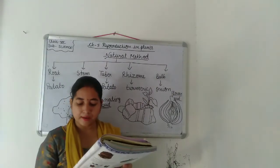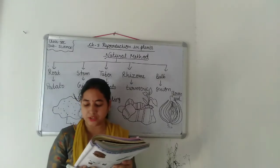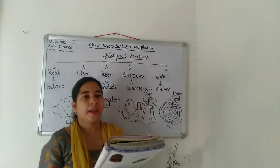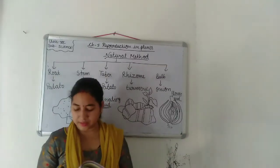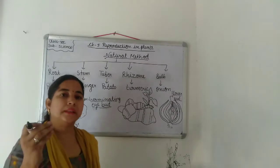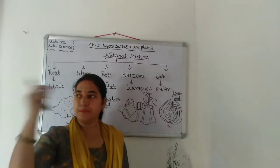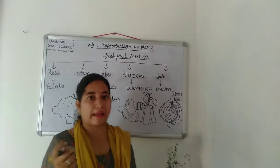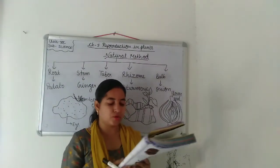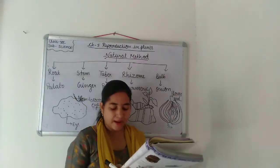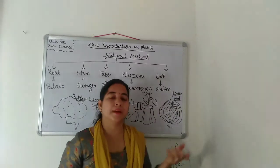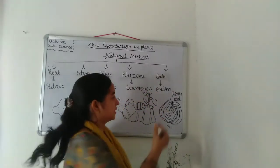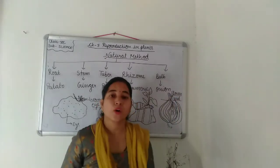Now bulb — certain plants such as onion, garlic, and tulip produce a short thick stem called a bulb. Bulbs have thick leaves called scales that contain food for the plant. Onion per jo transparent jilli si paai jaati hai, unhe scales kehte hain. When planted, the bulb develops into a new plant. Hamare ghar mein jo onion hota hai, uus par kuch samay baad choti choti green leaves dikhne lagti hain — matlab wahan se germinate hona start ho jata hai.